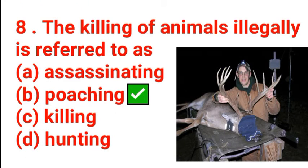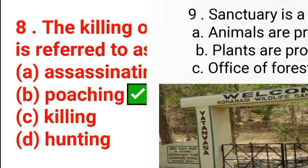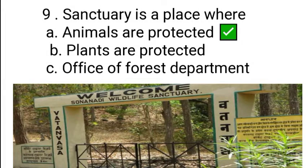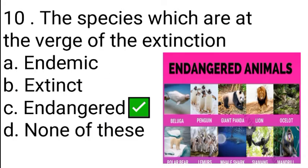The killing of animals illegally is referred to as poaching. A sanctuary is a place where animals are protected. The species which are at the verge of extinction are called endangered species. These are examples of endangered animals.